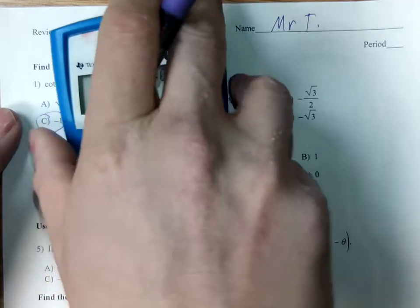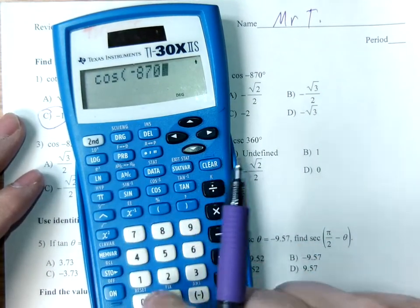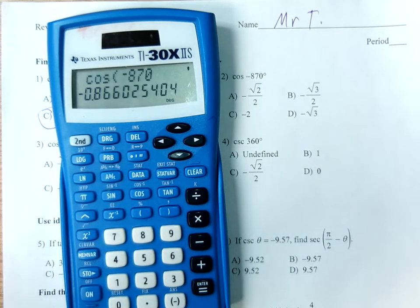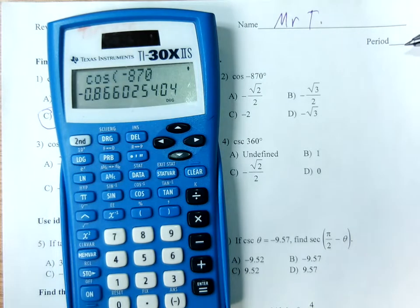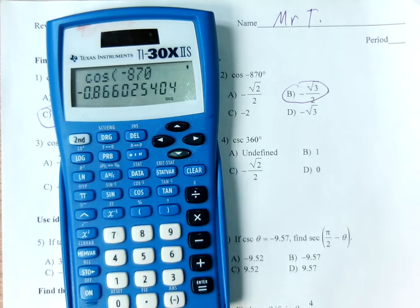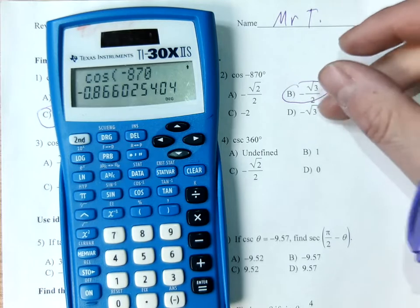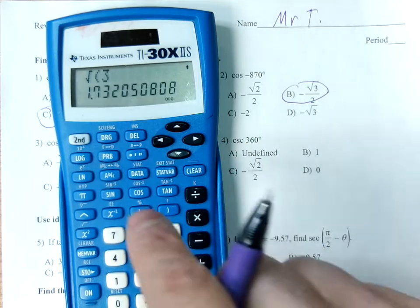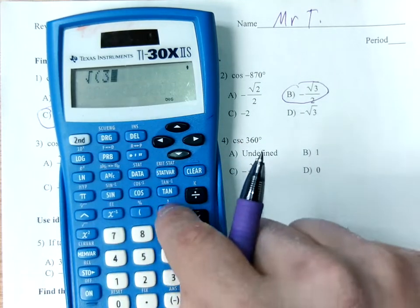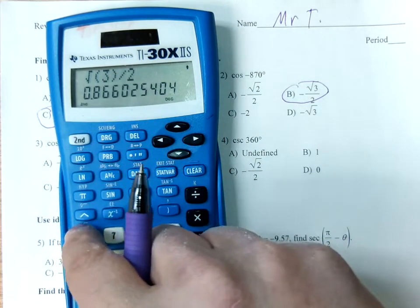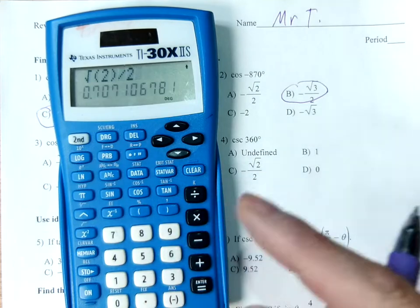Cosine of negative 870. This is the decimal approximate: negative 0.866. I'd like you to memorize the roots. This is root 3 over 2 — not root 3. It should be easy to identify this as root 3 over 2 versus root 3 or root 2 over 2. The square root of 3 is 1.73, square root of 3 divided by 2 is 0.866, and square root of 2 divided by 2 is 0.707.